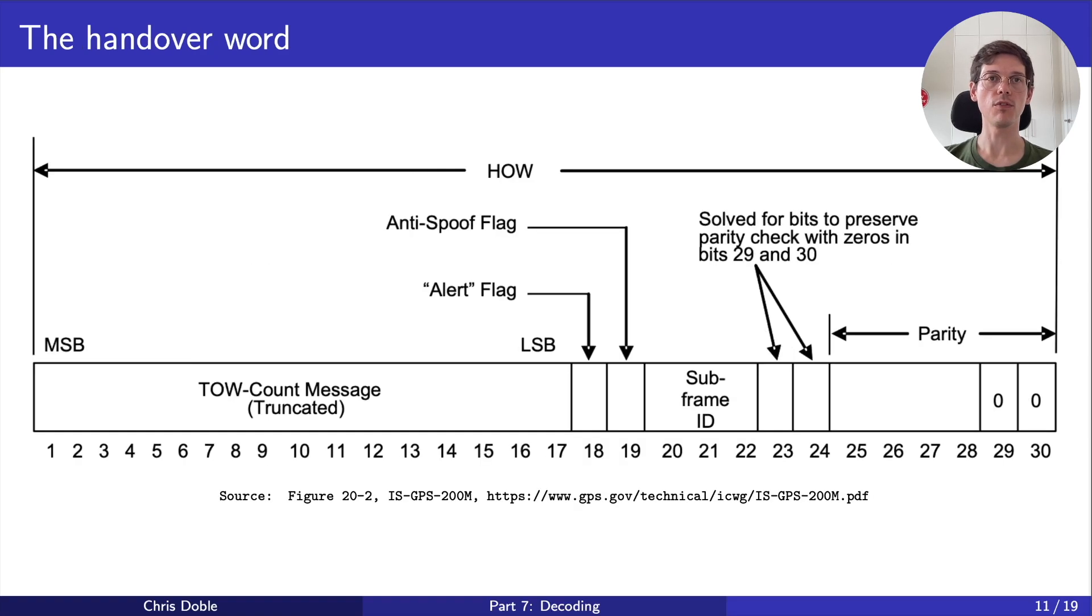The second word in each subframe is called the handover word, and it contains several parameters that we'll talk about in turn. The first parameter is a 17-bit number called the truncated TOW count. To understand this number, we first need to talk about how GPS handles time.